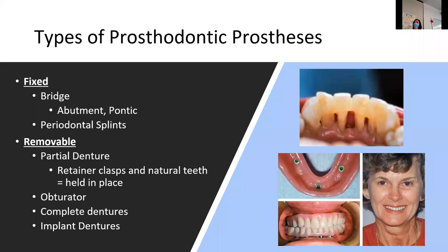Types of prosthesis: we have fixed — bridges — things that are fixed, meaning you can't take them out. They're prostheses that aren't going to go anywhere. With bridges, you have abutments and pontics. You also have periodontal splints — for example, when there's so much bone loss that teeth are quite mobile, they build up a splint with composite material to stabilize those teeth.